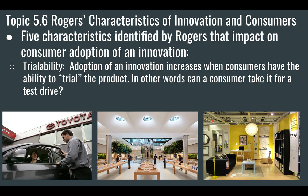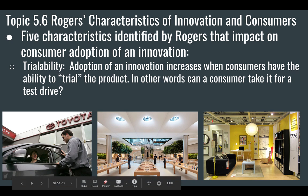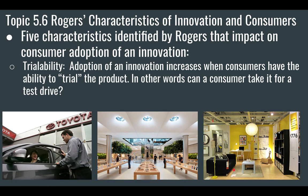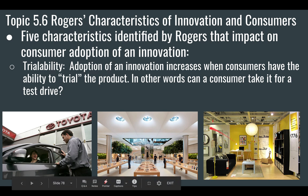Many companies allow easy returns to address the trialability problem, but if they didn't, you'd be stuck with what you got. This is a huge issue with clothes and shoes. Zappos, which sells shoes online in the US, lets you order shoes, have them shipped, and if you don't like them, ship them back for free. That's an important part of their business model. IKEA also does a good job — you can sit in the furniture and test things out before you buy.